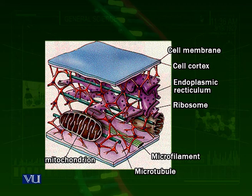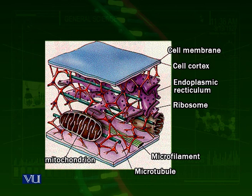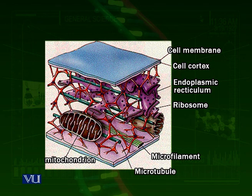Another view of the same arrangement shows the cell membrane, endoplasmic reticulum, microtubules, microfilaments, and a mitochondria entangled in them. Just like mitochondria, other organelles are also kept in place by cytoskeletal elements. Whenever they need to move — for example, if energy is required in another part of the cell, mitochondria produce energy molecules — the mitochondria will be transported to that part of the cell along microtubules.